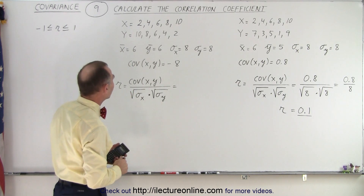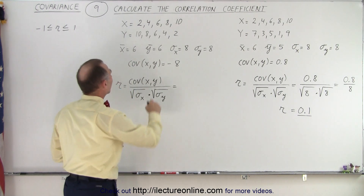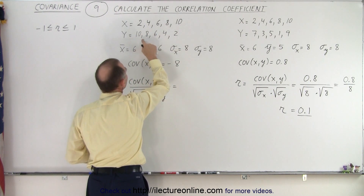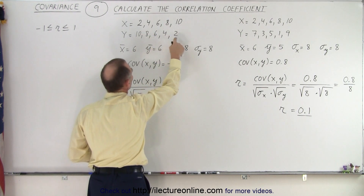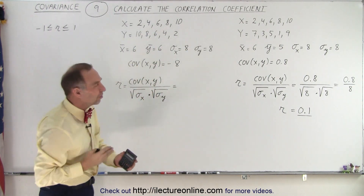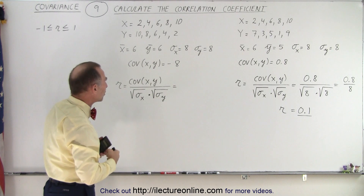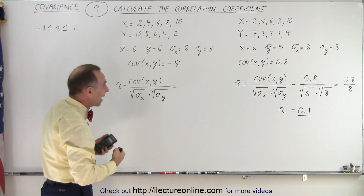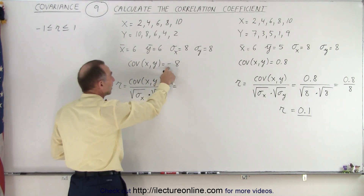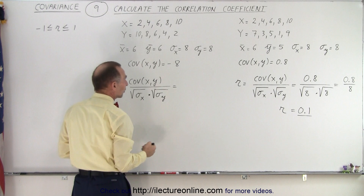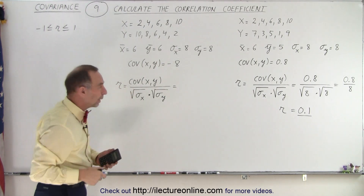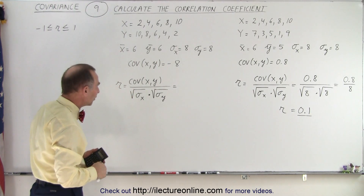Now let's take a look at our second data set. Here we have 2, 4, 6, 8, 10 and 10, 8, 6, 4, 2. You can see that one is increasing while the other one is decreasing, so you would expect a negative covariance — and sure enough, we end up with negative 8 for the covariance. If you want to see how that's calculated, we did that already in some previous videos.